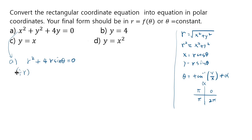And then if you divide by r, then you get r plus four sine theta equal to zero, and you get r equals to negative four sine theta.